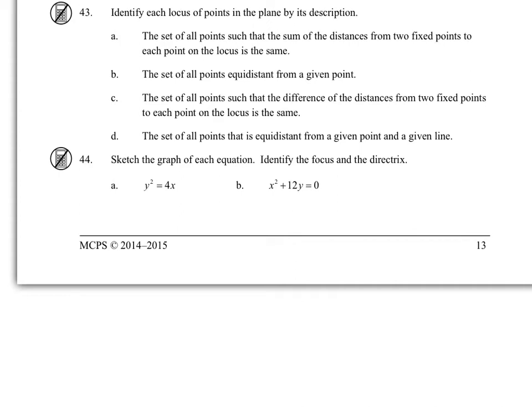For identifying conic sections based on the description of the locus of points, I'm going to look for key words that lead me to the format of the equations. The sum of distances from two fixed points, which are the foci — because it's a sum, this is an ellipse.